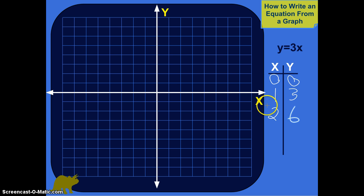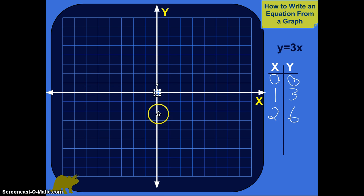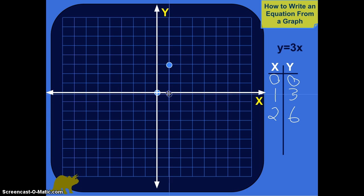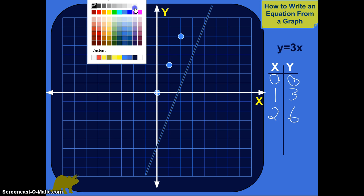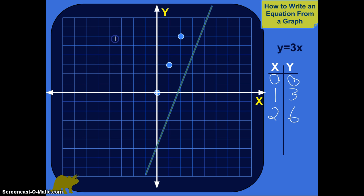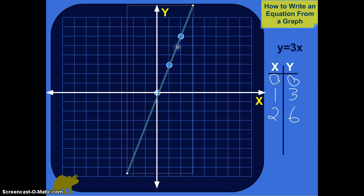Now we've got three ordered pairs that we can turn into points on the coordinate plane. Let's graph those. So (0,0): x is 0, y is 0, that'll be right there. (1,3): x is 1, y is 3. And (2,6): x is 2, y is 6. There are three points on our line. We're going to connect them with a line — let's make it green. Now you've graphed this equation, y equals 3x.